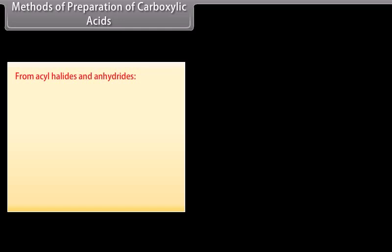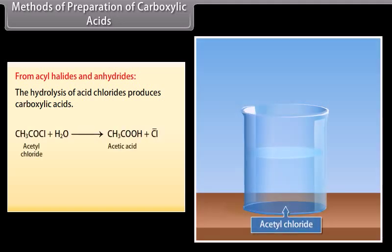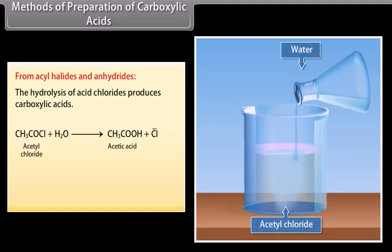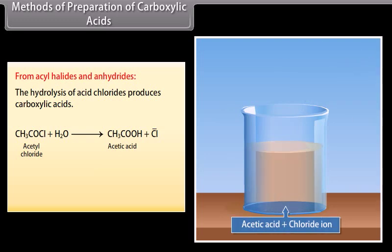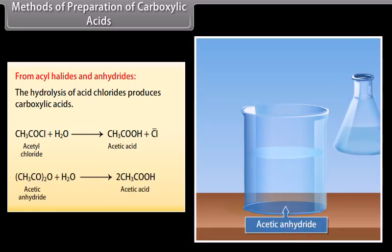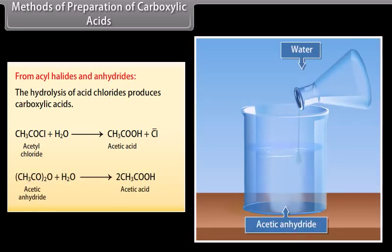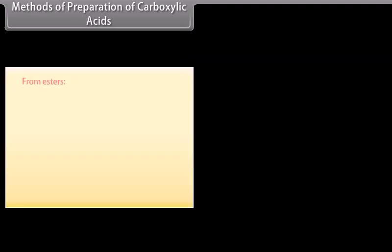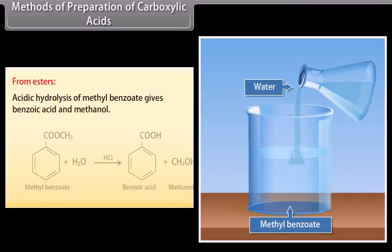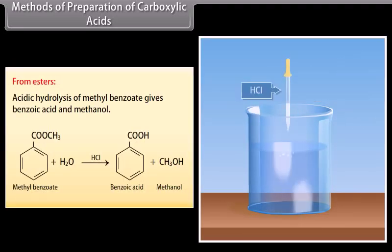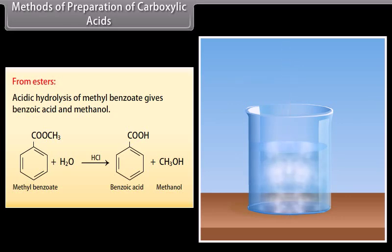From acyl halides and anhydrides: the hydrolysis of acid chlorides produces carboxylic acids. On hydrolysis of acetyl chloride, it produces acetic acid. The hydrolysis of acetic anhydride also produces acetic acid. From esters: acidic hydrolysis of methyl benzoate gives benzoic acid and methanol.